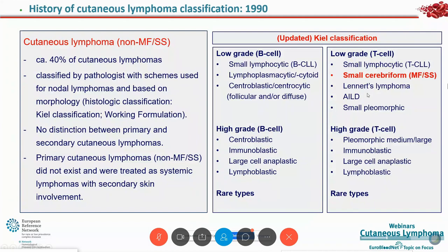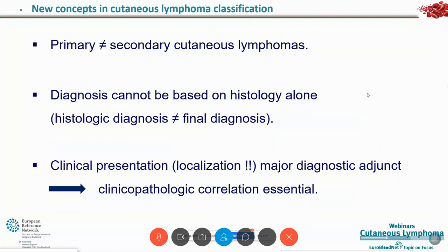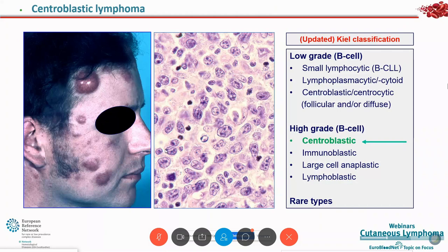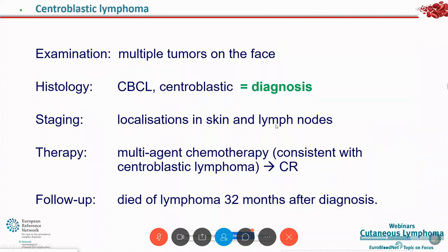So, what were the new concepts that led to the definition of new lymphomas and new classifications? First, recognition that primary and secondary cutaneous lymphomas are completely different. Second, that the diagnosis can never be based on histology alone — clinical presentation is very, very important as a major diagnostic adjunct. Here is an example: a patient presenting with multiple tumors on the face, with histology showing centroblastic lymphoma — now called diffuse large B-cell lymphoma. Staging revealed skin and lymph node involvement, chemotherapy was given, and the patient died 32 months after diagnosis.